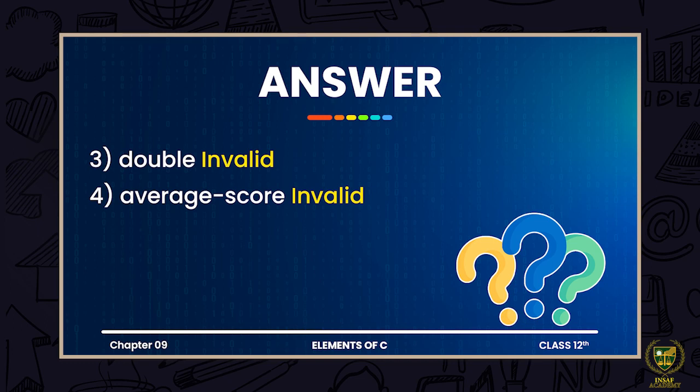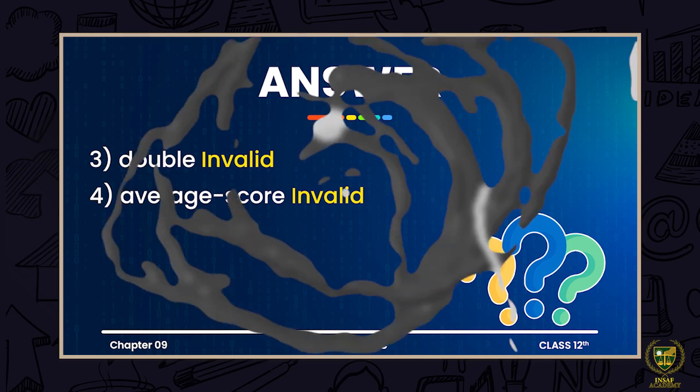The next variable name is 'average-score'. If you look at it, this is also an invalid name. Why? Because special characters are not allowed in variable names. Here a hyphen is used, and hyphen is not among the allowed symbols. If you had used an underscore in its place — 'average_score' — that would be an allowed one.